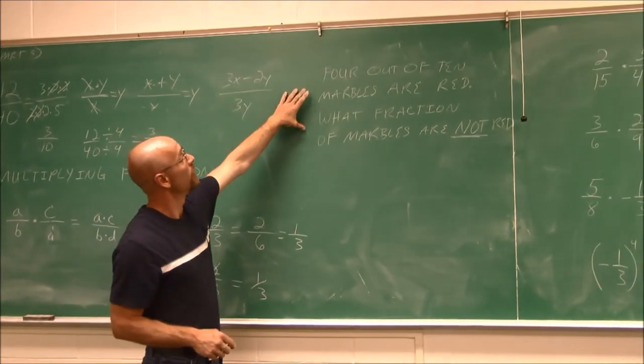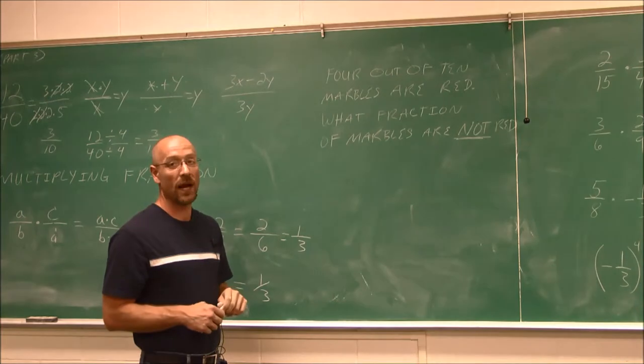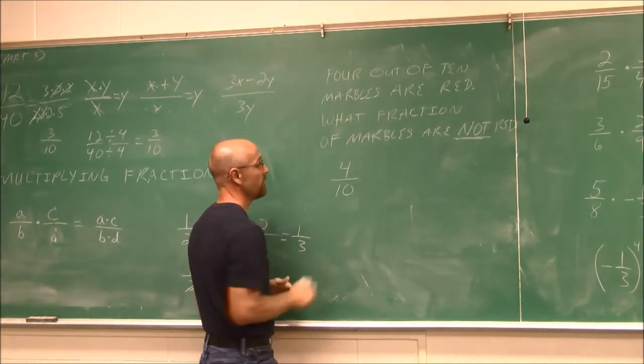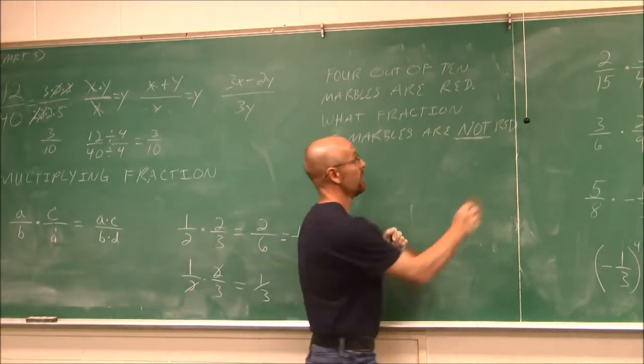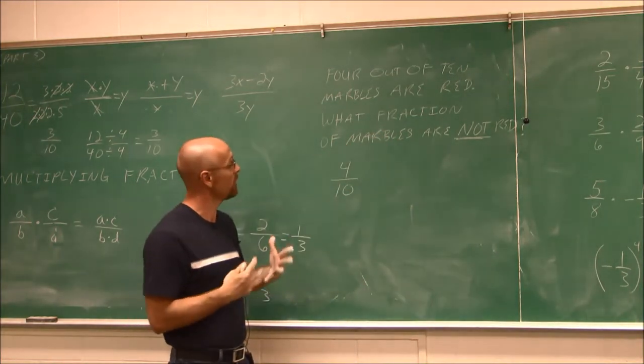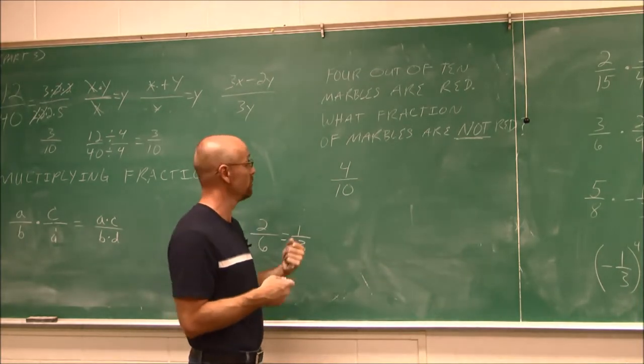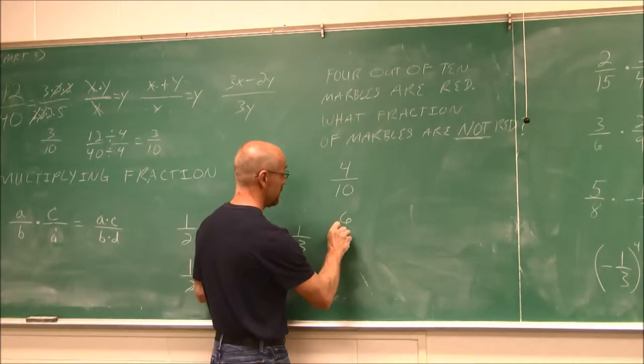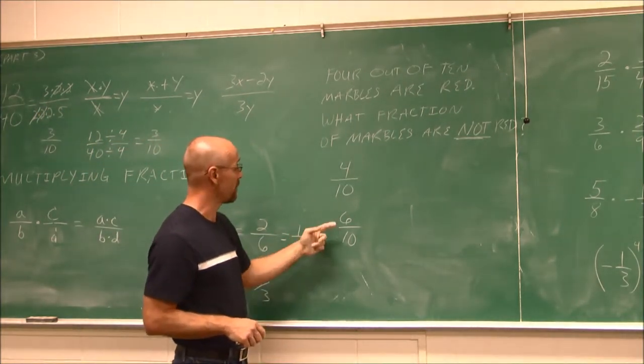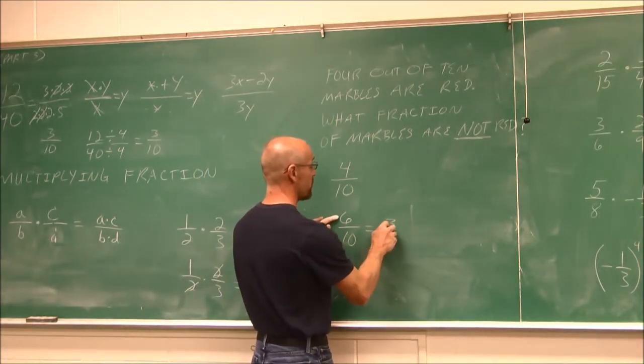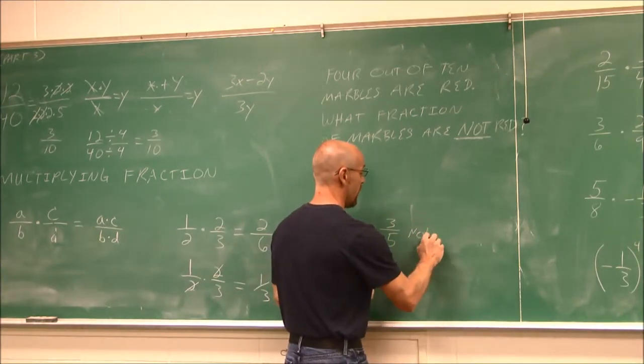We're going to look at a little story problem, an application to fractions. It says 4 out of 10 marbles are red. What fraction of marbles are not red? 4 out of 10, I can write that as 4 per 10. This is the number that are red marbles in this bag. But the question asks what fraction of marbles are not red. If there's 10 marbles and four of them are red, I have to think about how many marbles would still be in the bag if I took the four red ones out. I would have 6 out of 10. But we had to reduce our fractions. I recognize 6 and 10 are both divisible by 2. So this becomes 3 fifths. 3 fifths is the fraction of marbles that are not red.